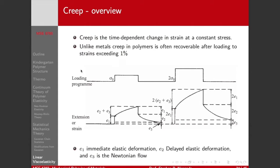So we can break this viscoelastic behavior down into two limiting cases. One is creep, and another is stress relaxation. Creep is the time-dependent change in strain at a constant stress. When we get to stress relaxation, we're going to hold the strain constant and look at how the stress changes with time. So in contrast to metals, the creep in polymers is often recoverable.